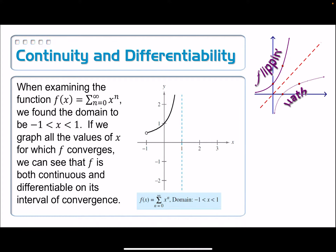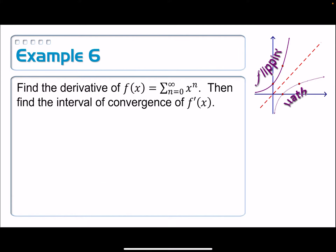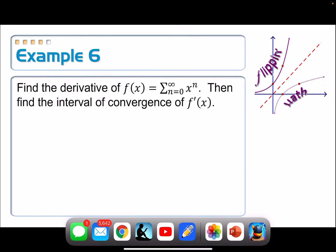That means we could take the derivative and antiderivative of a power series. We're thinking of it as an infinitely long polynomial, so it's basically just the power rule. Find the derivative of f of x equals summation from n equals 0 to infinity of x to the n, then find the interval of convergence of that derivative.